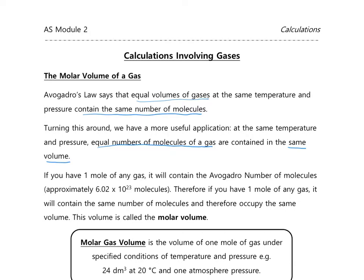If we have one mole of a gas, we know that one mole is the Avogadro number of molecules — approximately 6.02 × 10²³. So one mole of any gas will contain 6.02 × 10²³ molecules, and that number of molecules occupies the same volume. We call this volume the molar volume.